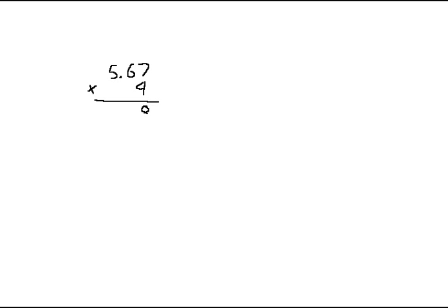7 times 4 is 28 — carry a 2. 6 times 4 is 24, plus 2 is 26 — carry another 2. 5 times 4 is 20, plus 2 is 22. Put the decimal place in and add a dollar sign: $22.68 is the answer. If inflation increased everything four times, 4 times $5.67 equals $22.68.